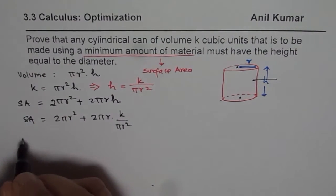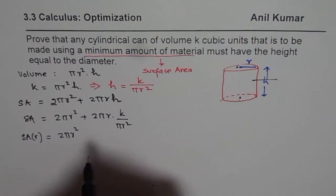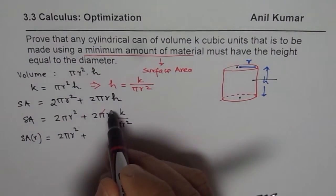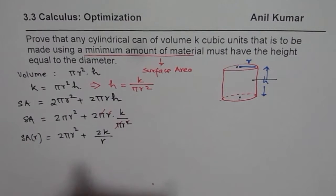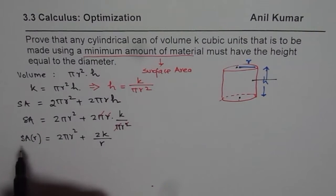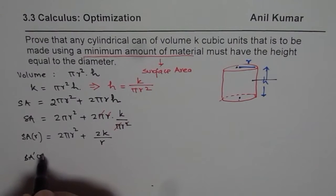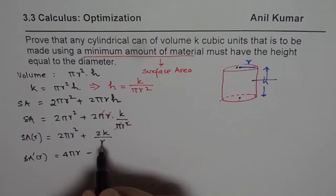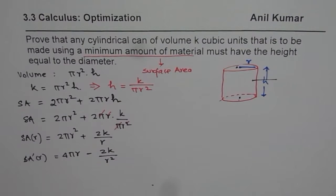We can now simplify. The surface area in terms of r becomes 2πr² + 2k/r, since the π values cancel. So that is the surface area as a function of r. To find the minimum we need to find the critical point, so let us find the derivative of surface area with respect to r. That gives us 4πr minus 2k/r².